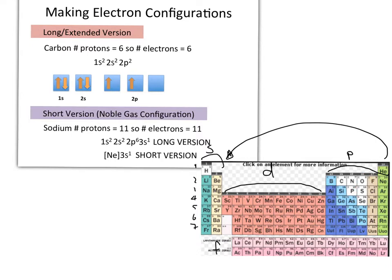The P block means the last electron in the configuration for an element like phosphorus is in a P orbital. The D block starts at principal quantum number 3, going to 4, 5, 6, etc., while the F block starts at 4 and 5 respectively. When asked to write an electron configuration without specifying short or noble gas version, assume the long version unless otherwise indicated.